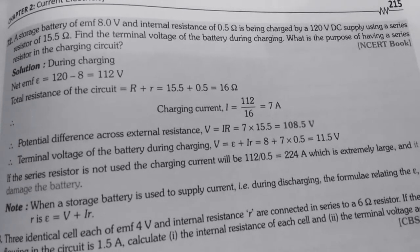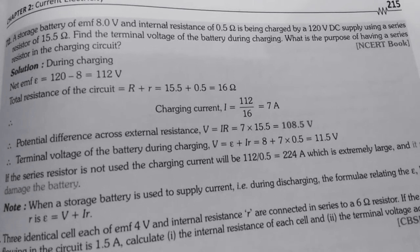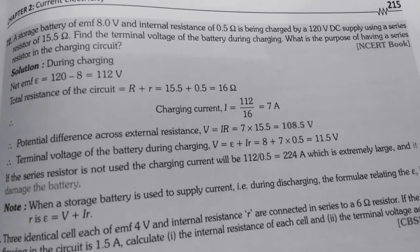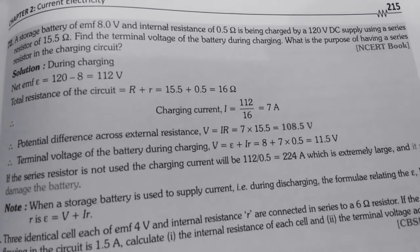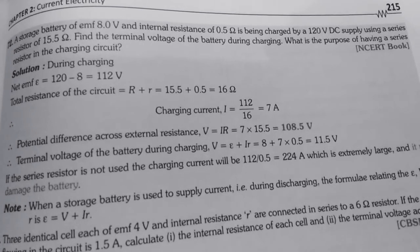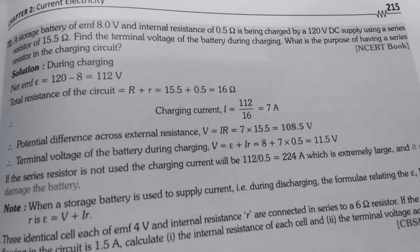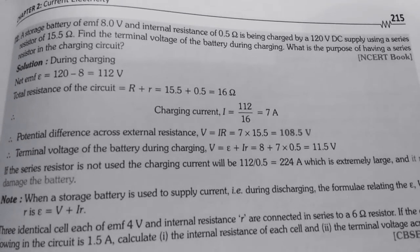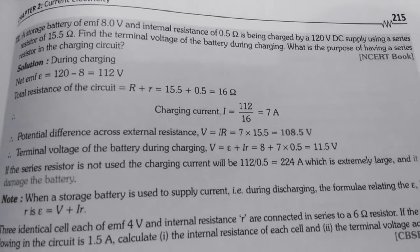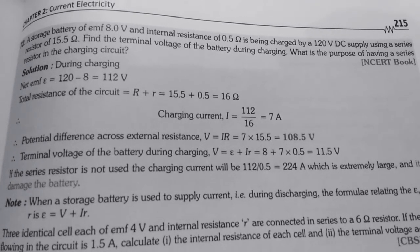So, first of all we will see what values are given. In question EMF E is given 8V. Internal resistance that is small r is given 0.5 Ohm. And the supply circuit is having 120V DC supply. Then external resistance is given 15.5 Ohm. That is capital R. So, first of all during charging we will find out the net EMF. Net EMF equals to the voltage or the EMF supplied by the source minus EMF of the battery. So, 120 minus 8 that is 112V.